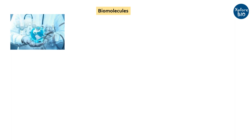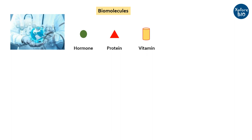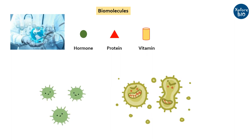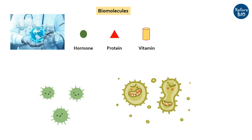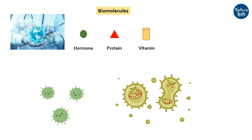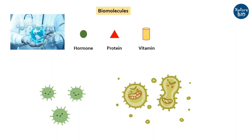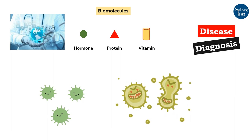Modern science dwells upon detection of diseases based on increase or decrease of a particular biomolecule. For example, our hormonal level or certain proteins or vitamins might get increased when we encounter certain viral or bacterial infection. And if by some means we can measure the amount of a specific biomolecule, it is possible to diagnose that particular disease.